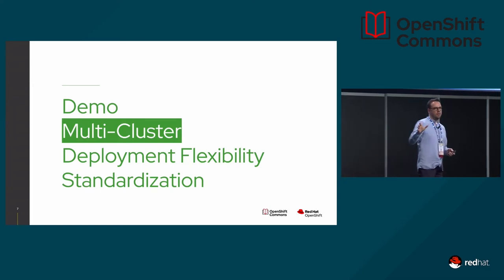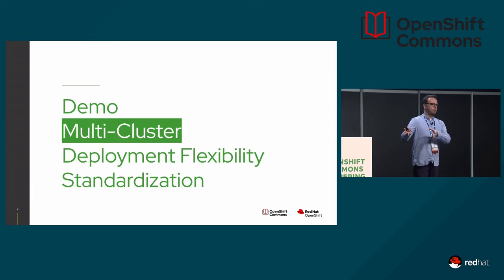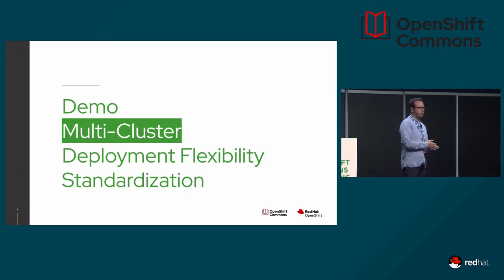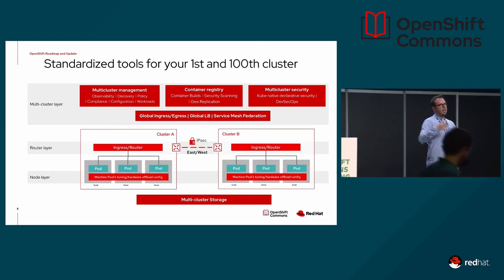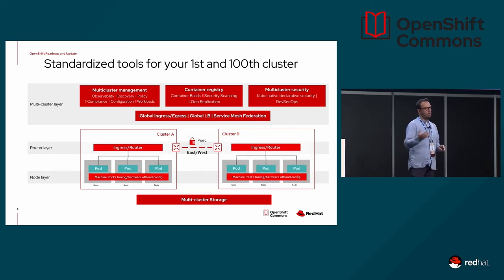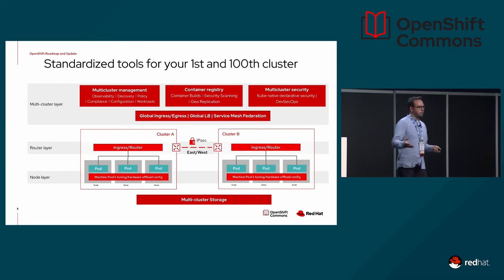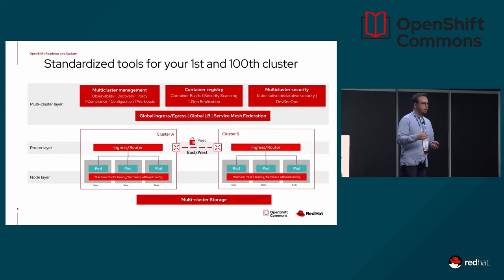We group our roadmap into three main areas. The first is multi-cluster. Multi-cluster is the main direction we're taking the whole platform — moving away from very few but extremely large clusters shared by hundreds of tenants, to a model where tenants get their own clusters for specific purposes, with specific hardware from specific cloud providers. We want you to manage these at the fleet level, scaling without drowning in operational work.